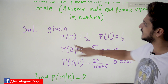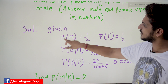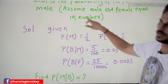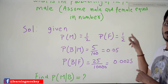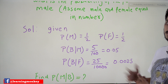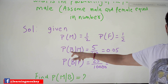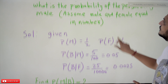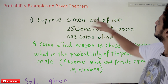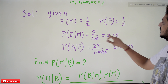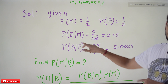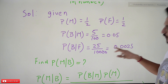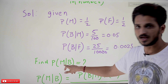From the given data: probability of male = 1/2, and probability of female = 1/2, since male and female are equal in number — fifty percent each. Probability of color-blind given male = 5/100 = 0.05. Probability of color-blind given female = 25/10,000 = 0.0025. We need to identify the probability of the person being male given they are color-blind.